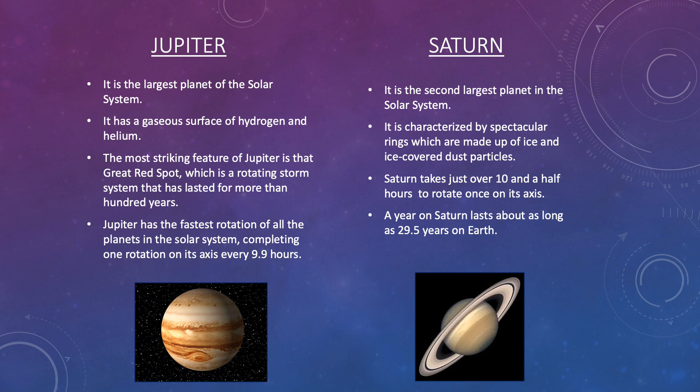Saturn is the second largest planet in the solar system. It is characterized by spectacular rings which are made up of ice and ice-covered dust particles. Saturn takes just over 10 and a half hours to rotate once on its axis. A year on Saturn lasts about as long as 29.5 years on Earth.